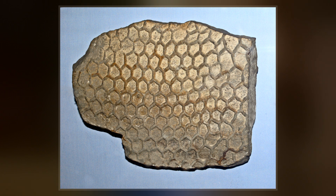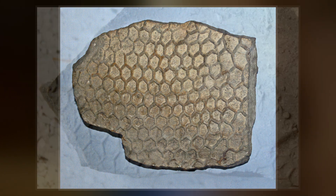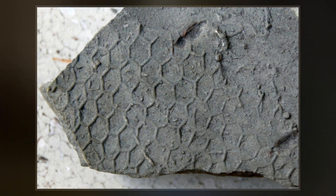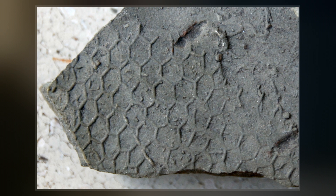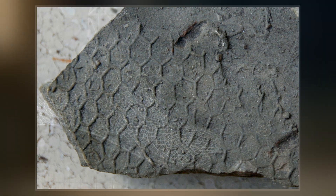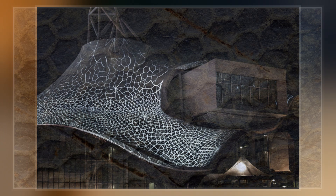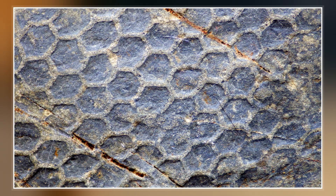Paleodichion consist of thin tunnels or ridges that usually form hexagonal or polygonal shaped honeycomb-like networks. Both irregular and regular nets are known throughout the stratigraphic range of Paleodichion, but it is the striking regular honeycomb pattern of some forms such as P. carpathicum and P. noticum which make it notable and widely studied.